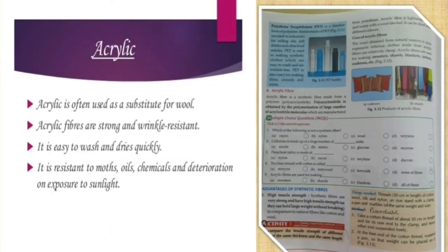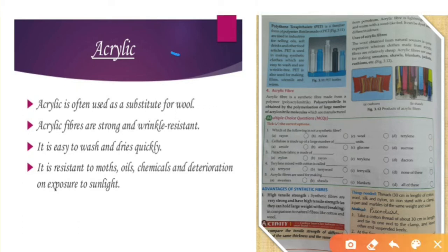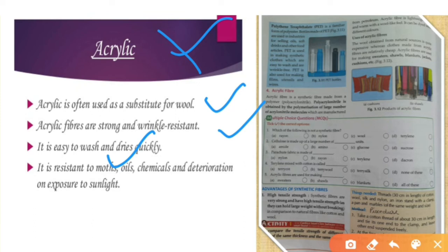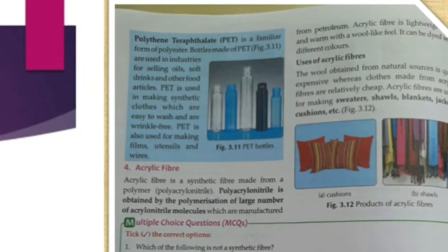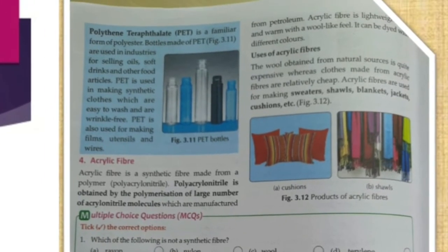The last fiber we are discussing is acrylic. It is used as a substitute for wool. Whatever woolen cloth is used especially in North India can be made from acrylic. It is the strongest and wrinkle resistant. Wool is often eaten by insects but acrylic is pest resistant. It also resists moths, oil, chemicals, deterioration, and exposure to sunlight.